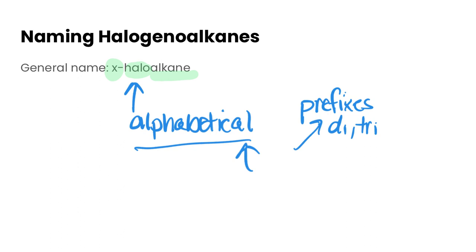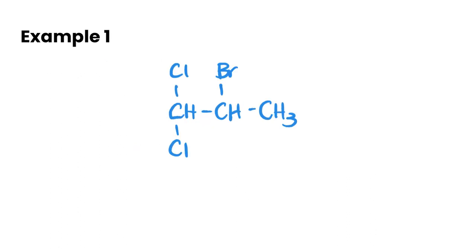Let's take a look at a couple of examples to see what I mean and to name some halogenoalkanes. Let's start with our first example here. We have a one, two, three carbon longest chain, and then we have a bromine attached here and two chlorines.